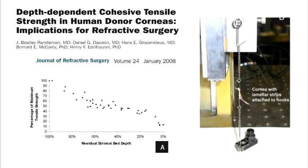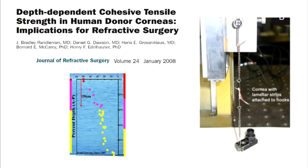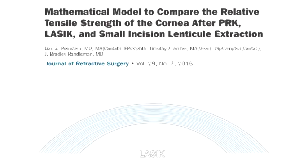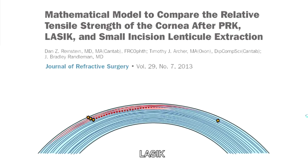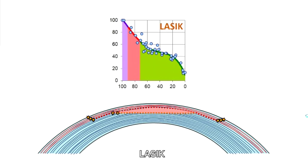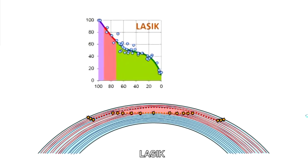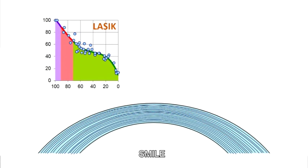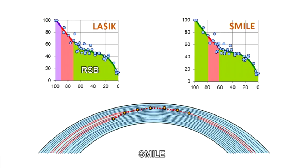Dawson and Randleman measured the cohesive tensile strength of the cornea at different stromal depths. These data served as the basis for a mathematical model that demonstrated the residual tensile strength after LASIK, which depends solely on the residual stromal bed, would be on average 28 percent lower than it would be after a SMILE procedure, which also considers the cap.